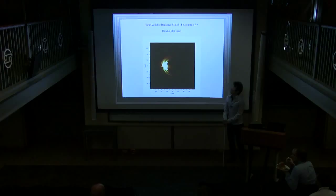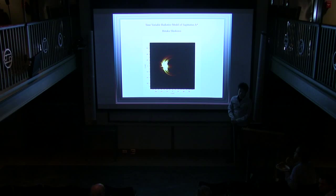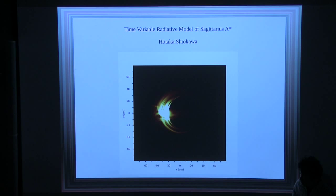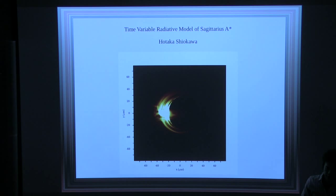Hello, everyone. I'm going to talk about time-variable radiative models of Sgr A*, which is a supermassive black hole at the center of the Milky Way galaxy. We try to model its accretion disk and emission from the accretion disk using numerical simulations, with a particular focus on short timescale variability of a couple of minutes to less than one hour, which primarily originates from turbulence in the disk.